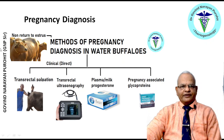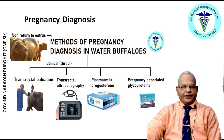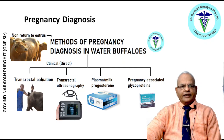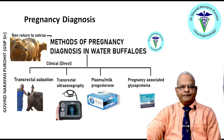Clinical methods include transrectal palpation, one of the oldest methods of pregnancy diagnosis in cattle, buffalo, and mares. It is considered minimally invasive, but one must keep in mind that transrectal palpation in the buffalo must be gentle compared to cattle, because the rectal mucosa of the buffalo bleeds very easily. Transrectal ultrasonography and other methods are also available, which we will discuss briefly one by one.